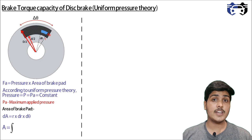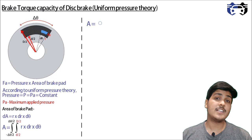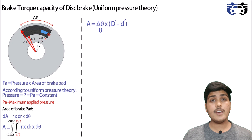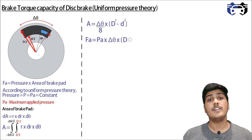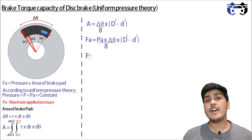According to uniform pressure theory, pressure equals maximum pressure pa equals constant. The elemental area dA equals r·dr·d-theta. So area equals the integration from minus delta-theta/2 to plus delta-theta/2, and from small d/2 to capital D/2 of r·dr·d-theta. This gives area equals delta-theta multiplied by (D² minus d²) divided by 8. Therefore, the force applied fa equals pa multiplied by delta-theta multiplied by (D² minus d²) divided by 8.